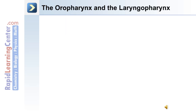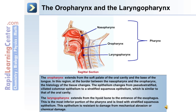The other two regions of the pharynx are the oral pharynx and the laryngopharynx. The oral pharynx extends from the soft palate of the oral cavity to the base of the tongue. In this region, at the border between the nasal pharynx and the oral pharynx, the epithelium changes from pseudostratified ciliated columnar epithelium to a stratified squamous epithelium, which is similar to that of the oral cavity.